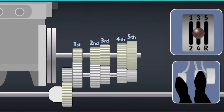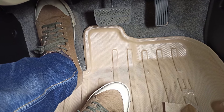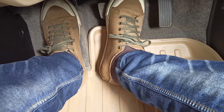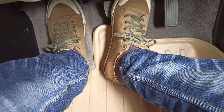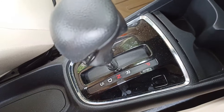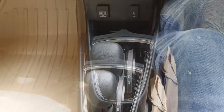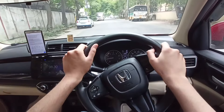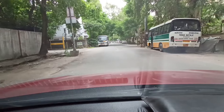Just like in manual cars where we put the gear in first and then the car rolls, in an automatic car we have to keep the brake pressed, then shift the gear to D. If you don't press the brakes, you will see the gear is locked and won't move. After putting the gear in D and releasing the brake, the car will start rolling. Once you press the accelerator, the car will go faster as the gears shift automatically.